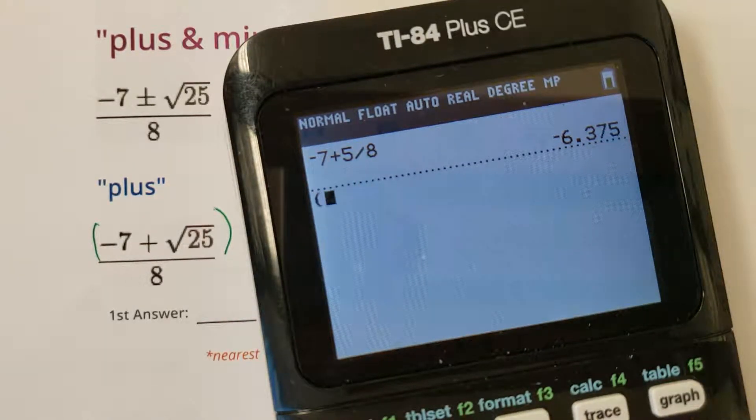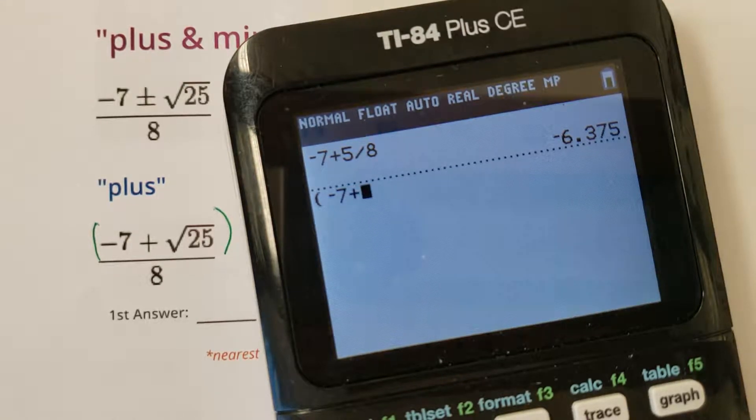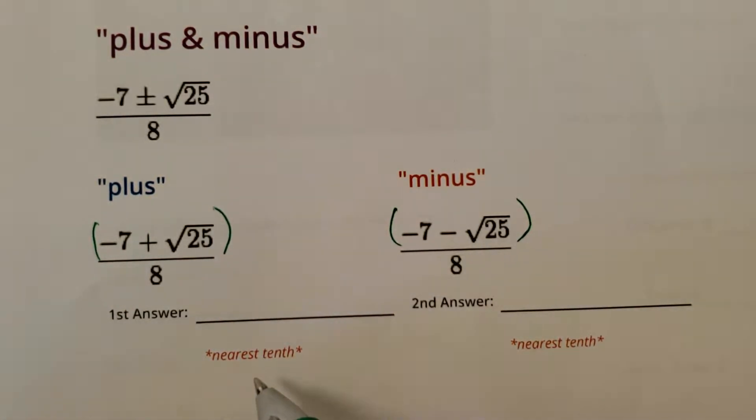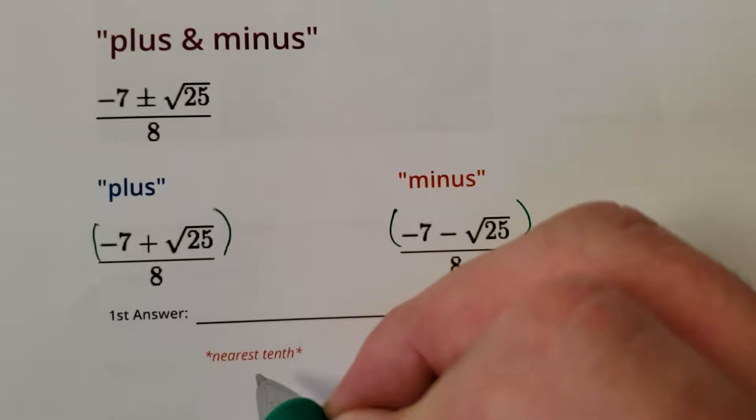Now if you want to do the whole thing at once in your calculator, add brackets around it, then divide by 8. Oh, okay, negative 0.25. What does it say? Nearest 10th. So I'll, oh shoot.